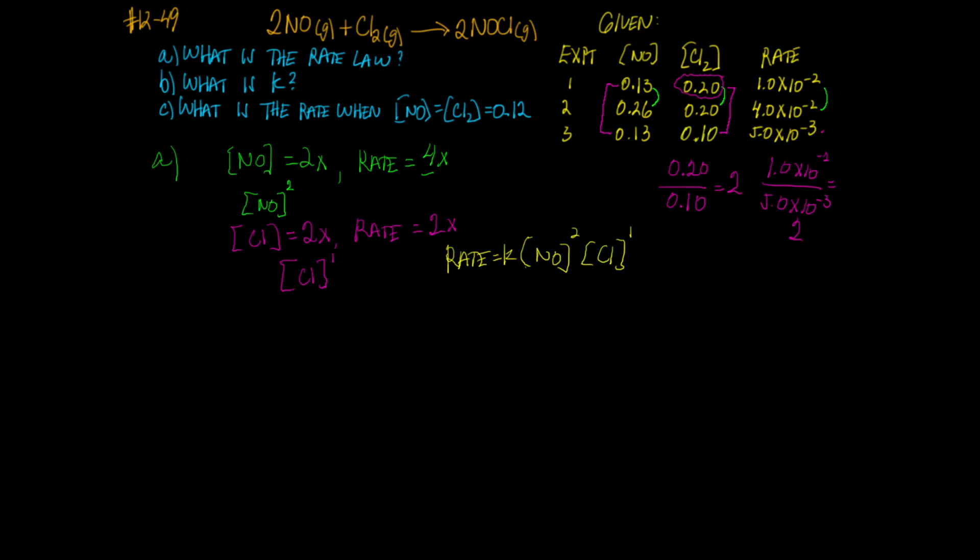In part B, we are asked to figure out what K is. We want to take this chemical equation and solve for K by dividing both sides. So K equals rate divided by NO squared times chlorine. I'll leave off the 1 because anything raised to the first power is just itself. We go ahead and plug in the data from the first experiment—I like to choose the first experiment.